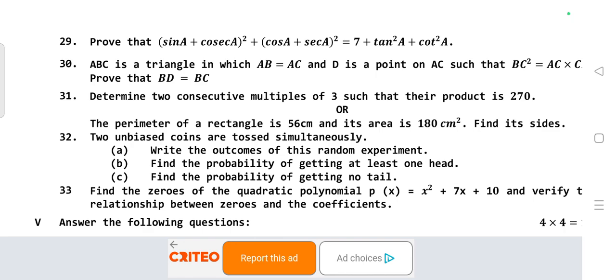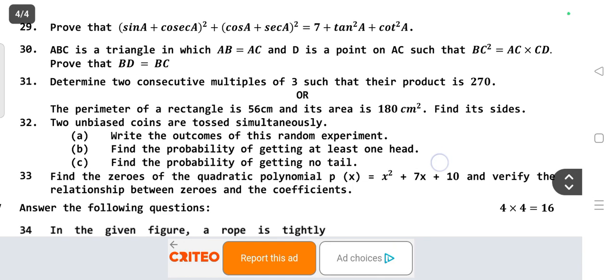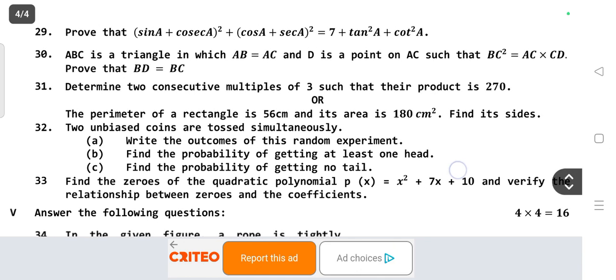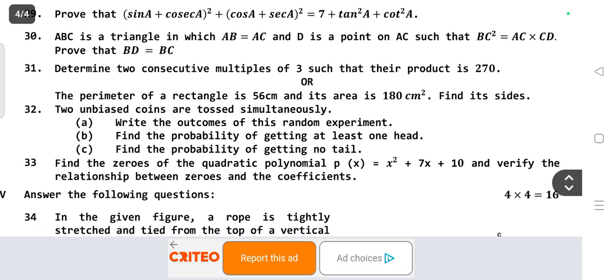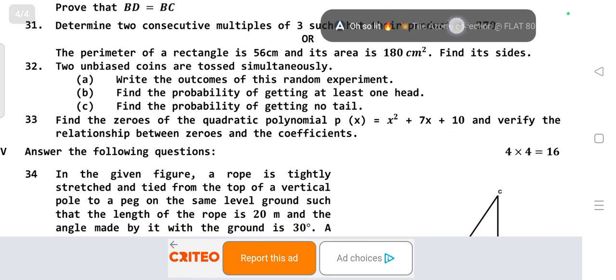ABC is a triangle in which AB equals AC and D is a point on AC such that BC² equals AC times CD. Prove that BD equals BC. Question 31: Determine two consecutive multiples of three such that their product is 270. OR: The perimeter of a rectangle is 56 centimeters and its area is 180 square centimeters, find its sides.